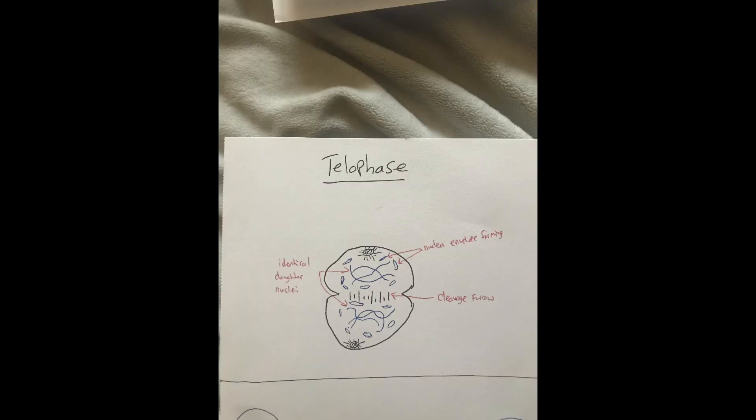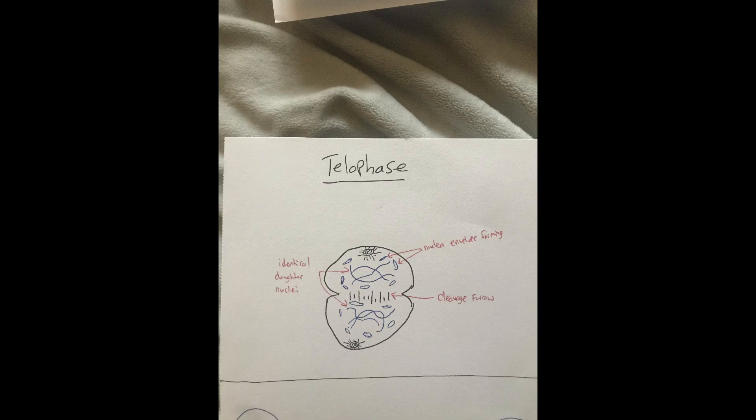This phase leads to the final main stage of mitosis, which is telophase. During telophase, the elongation that started from anaphase continues to the point where it starts to create a cleavage furrow. Nuclear envelopes form on both sides of the cell around the chromosomes. Mitosis is officially finished because the one nucleus turned into two genetically identical daughter nuclei.